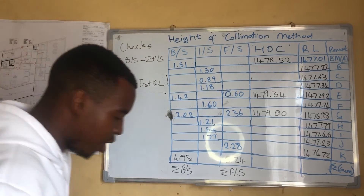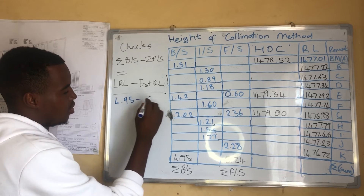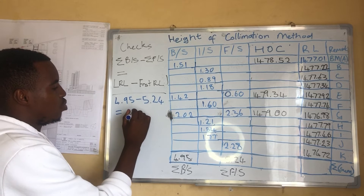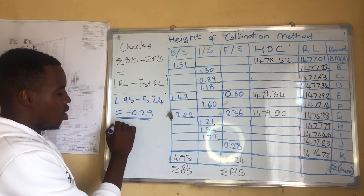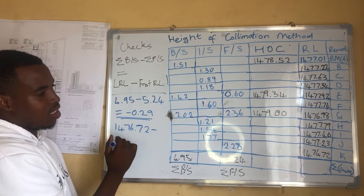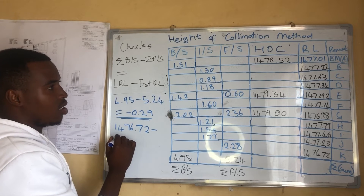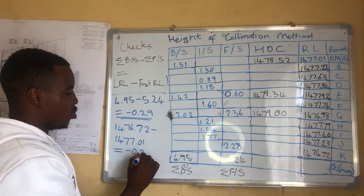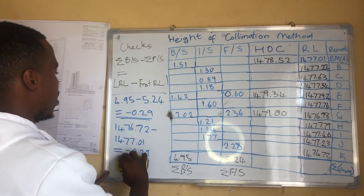So we are saying: summation of backsights 4.95 minus summation of foresights 5.24 gives us negative 0.29. Then for the second check: last Reduced Level 1476.72 minus first Reduced Level 1477.01 also gives us negative 0.29. These are the two checks we have for the Height of Collimation method.